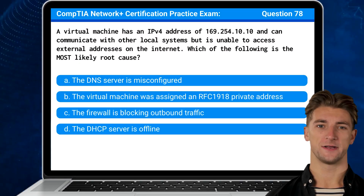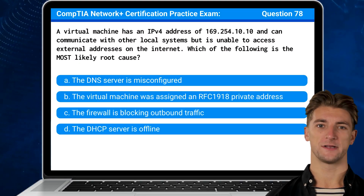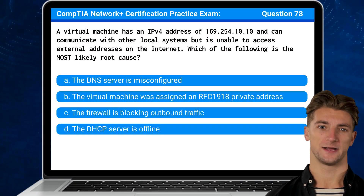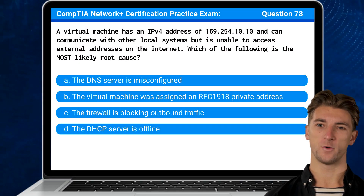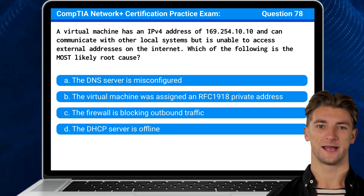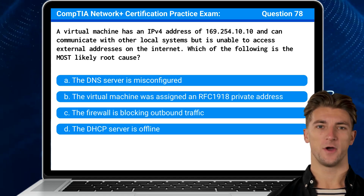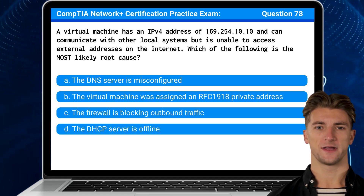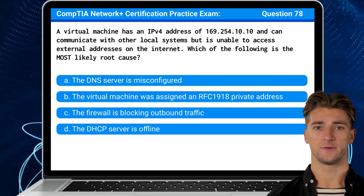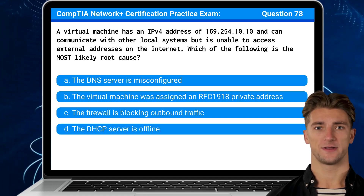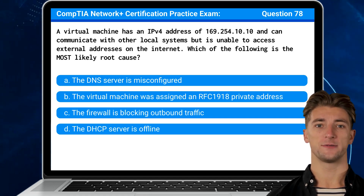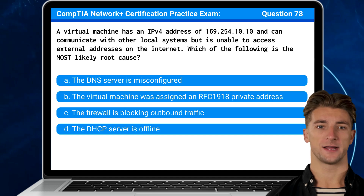Question 78: A virtual machine has an IPv4 address of 169.254.10.10 and can communicate with other local systems, but is unable to access external addresses on the internet. Which of the following is the most likely root cause?